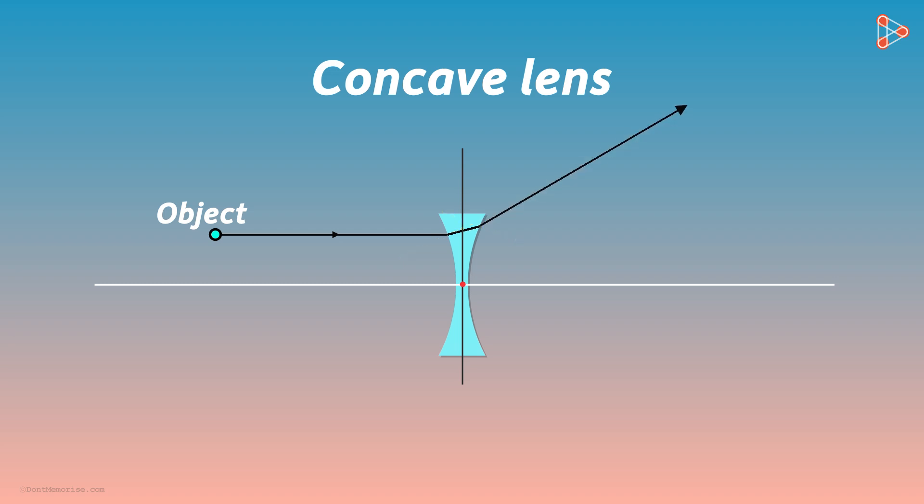Will the concave lens behave in the same way as the convex lens? Will the rays converge after refracting from a concave lens? If the rays from a point object are incident on a concave lens, then after refraction, they do not converge at a single point.